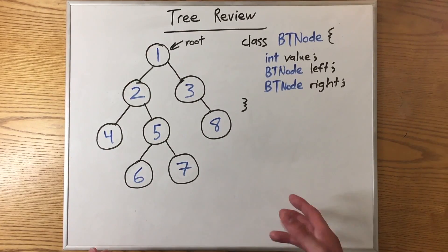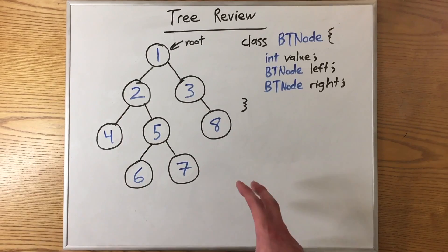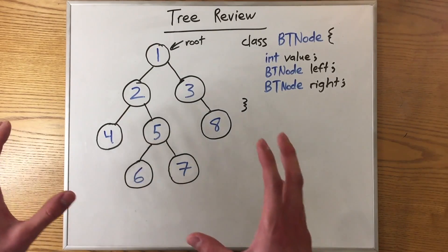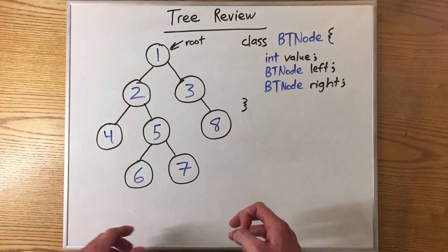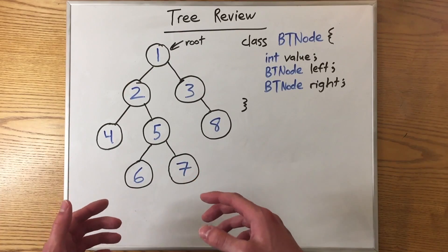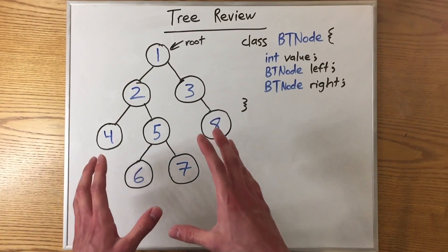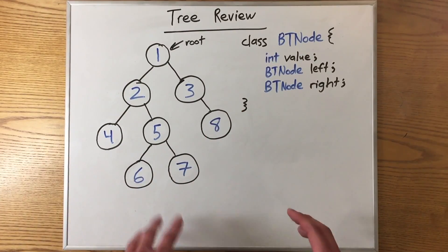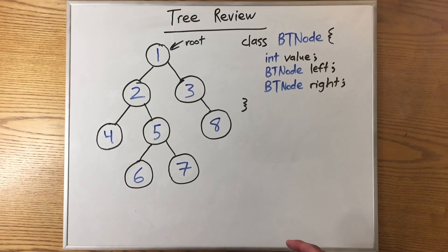The point of traversals is to help us figure out in what order we look at information when we're given a tree. It tells us if we should look at the leaves before we look at the root, and what order we should do everything when we look at the most basic subtree. Let's look at some tree traversals and find out.